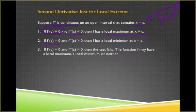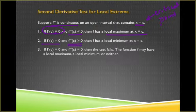We also have that if f prime of c is equal to 0, and the second derivative is greater than 0, then c is your local minimum.